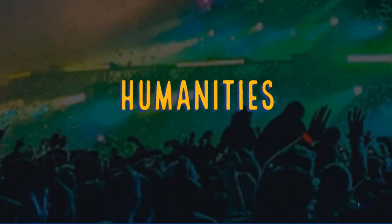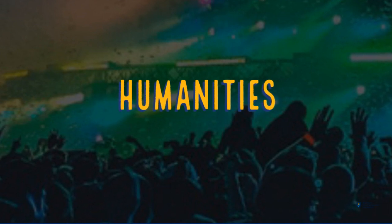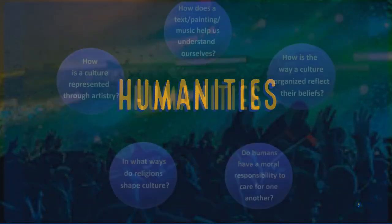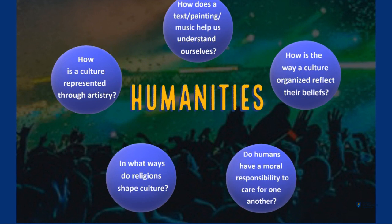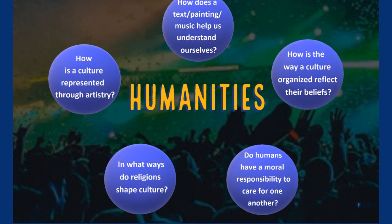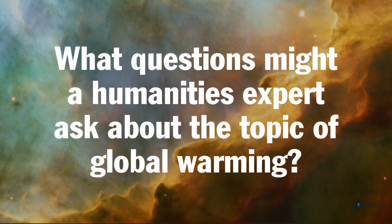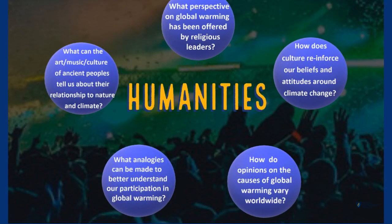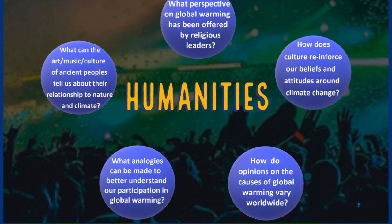The humanities lens is decidedly human. It concerns culture, art, religion, language, and all the things that make us people. Questions in the humanities lens might include how is a culture represented through artistry, or in what ways do religions shape culture? Consider what a humanities expert might ask about the topic of global warming. A humanities expert might wonder what political or religious leaders think about climate change.